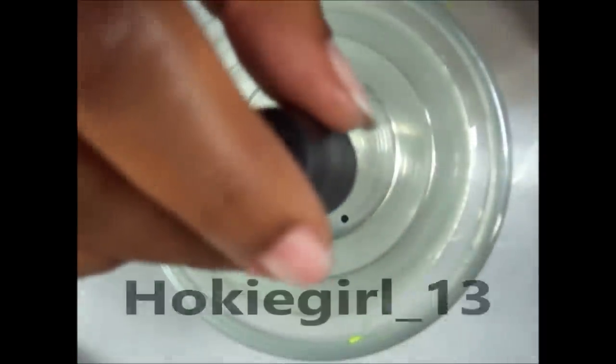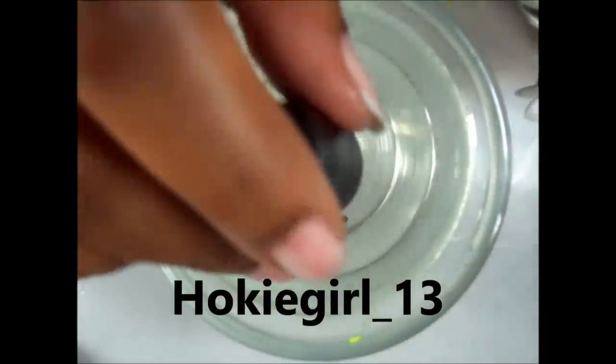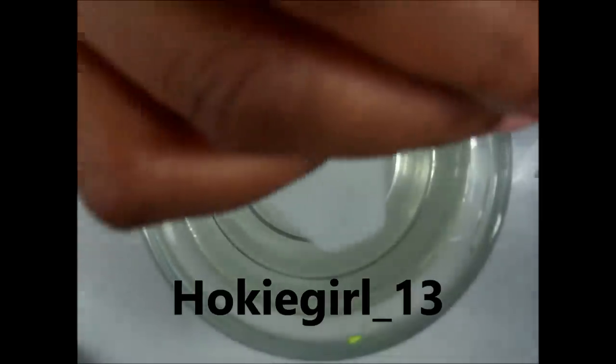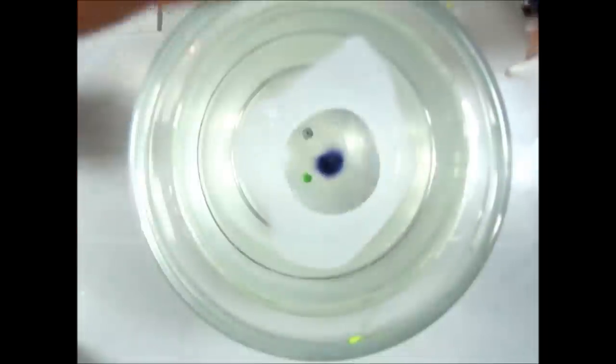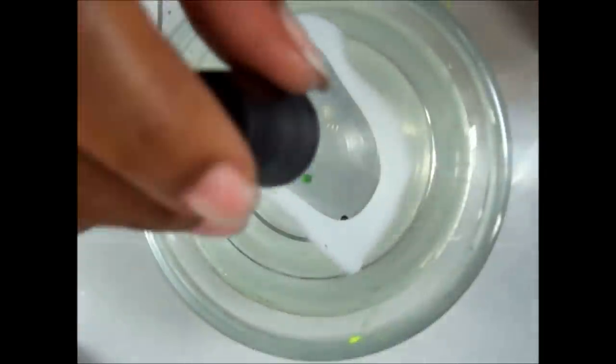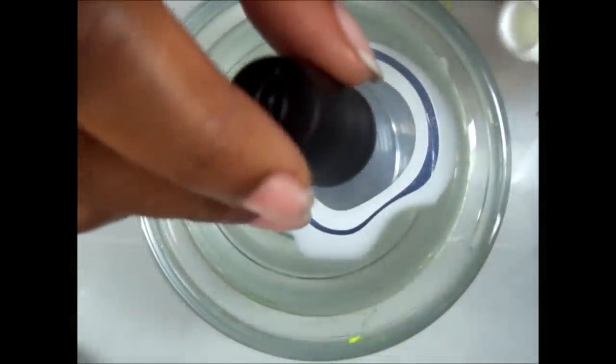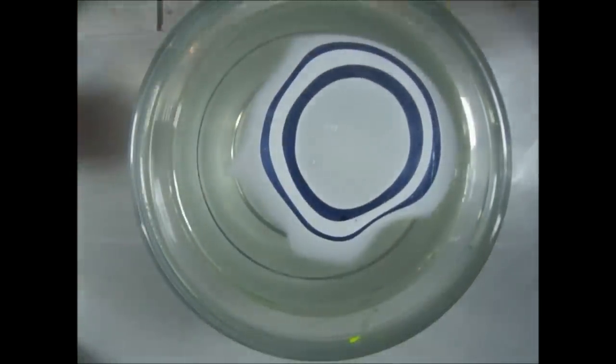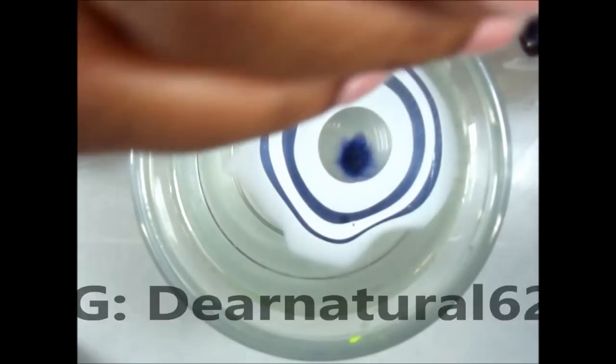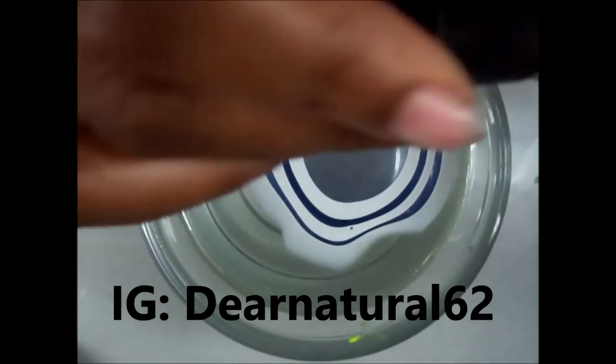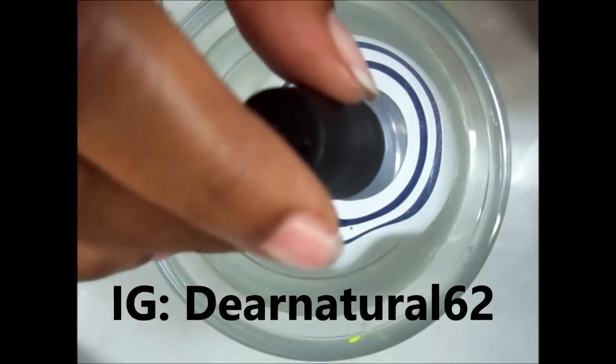So now this color combo is from an Instagram follower. They wanted to see a white, blue, and yellow inspired look. I am so loving Instagram right now and I love the fact that you can do videos too. The only thing I don't like about it, you've got to talk real fast on those videos because it's not that long. But other than that, I'm really feeling Instagram. If you like Instagram too, definitely let me know your Instagram profile name. And of course, mine is Dear Natural 62.